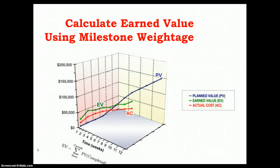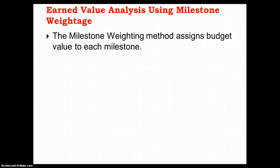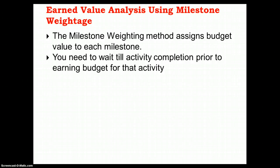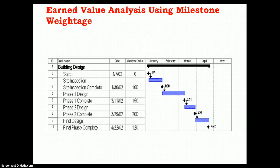In this quick tutorial we will analyze the method of calculating earned value using the milestone weightage method. The milestone weighting method assigns budget value to each milestone. You need to wait until activity completion prior to earning budget for that activity — you cannot claim any milestone credit for an activity which is still in progress. Careful consideration must be given in planning for milestones, which could correspond to key accounting periods.